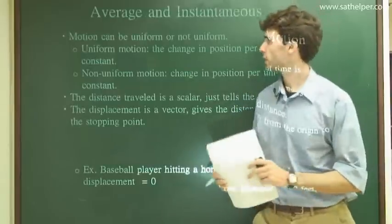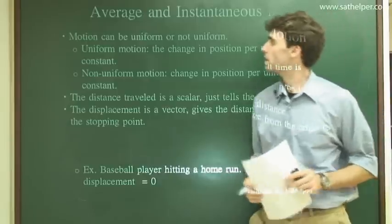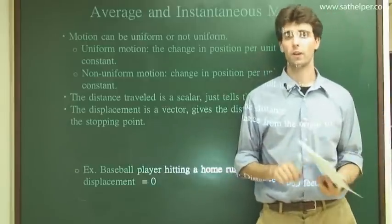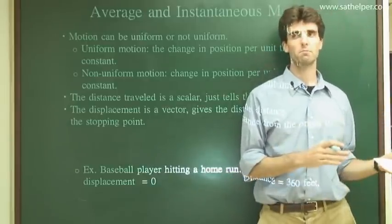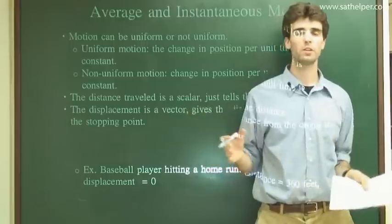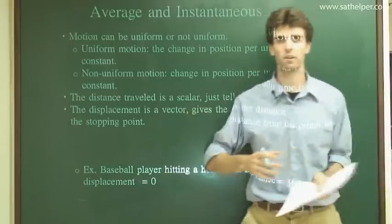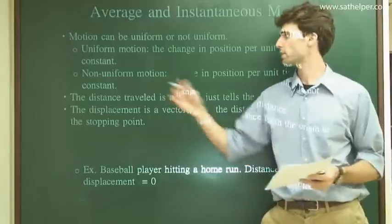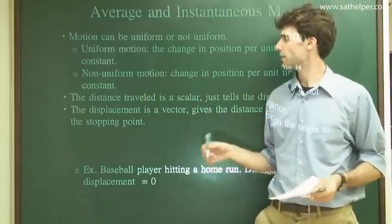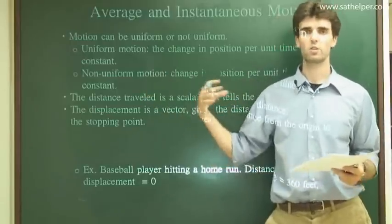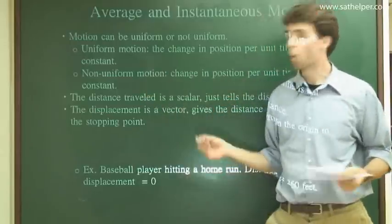First, I'll start off talking about instantaneous and average motion. So motion can be uniform or non-uniform. Uniform means smooth and unchanging rather than halting and starting and stopping, moving faster and slowing down. So like a constant change per unit time.